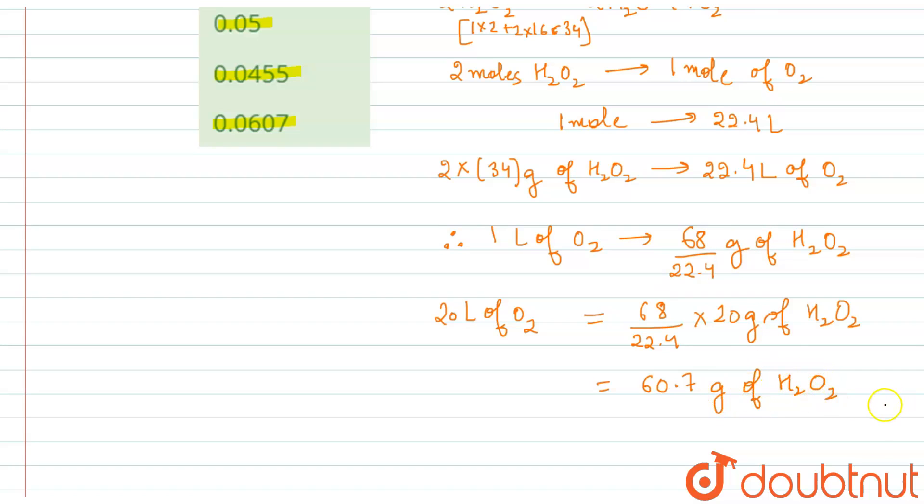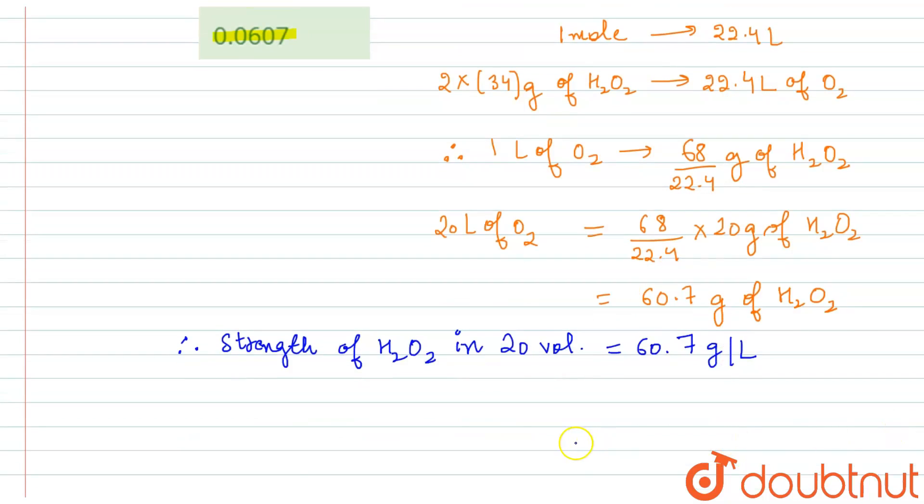Now we have to calculate the strength. So therefore, strength of H2O2 in 20 volume is equal to 60.7 grams per liter. And we have to calculate the percentage strength of H2O2 solution. So that will be 60.7.